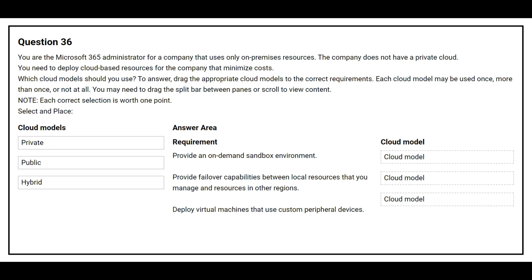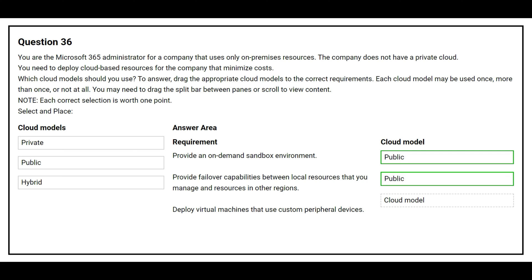The first requirement is: provide an on-demand sandbox environment — the correct cloud model is public. The second requirement is: provide failover capabilities between local resources that you manage and resources in other regions — the correct cloud model is public. The third requirement is: deploy virtual machines that use custom peripheral devices — the correct cloud model is hybrid.